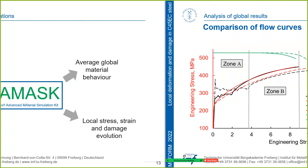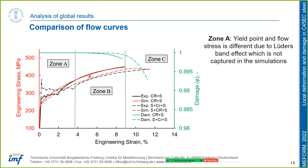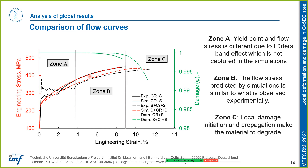Once we process the simulation results, we see a comparison of global stress-strain curves from simulations and experiments. In Zone A, the yield point and flow stress differ due to the Lüders band effect, which is not captured in the simulations. In Zone B, the simulation results are very close to experimental results and nicely capture the overall deformation behavior. In Zone C, damage initiation starts to take place, the material starts to degrade, and we will discuss how damage initiates and propagates locally.